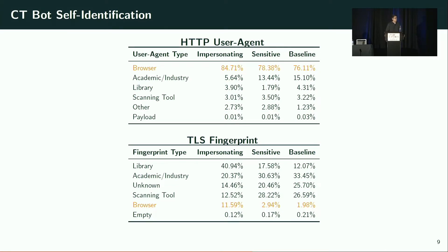Using TLS fingerprinting, we observed that, unsurprisingly, these bots spoof their user agents. We found that anywhere from 75% to 85% of these bots claim to be a real browser such as Google Chrome or Firefox, but the underlying TLS fingerprint showed that their TLS library is typically a scraping library like the Python requests library, with a real browser being used only 2% to 12% of the time.